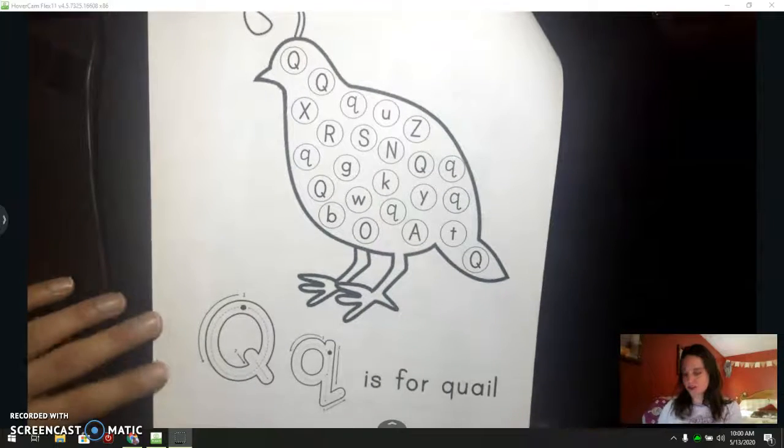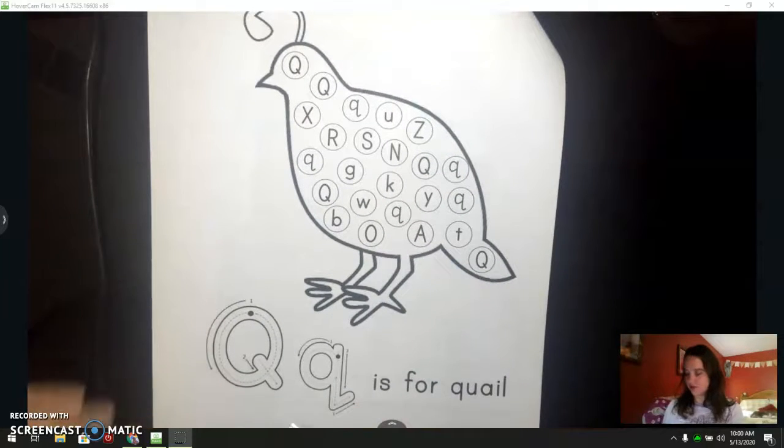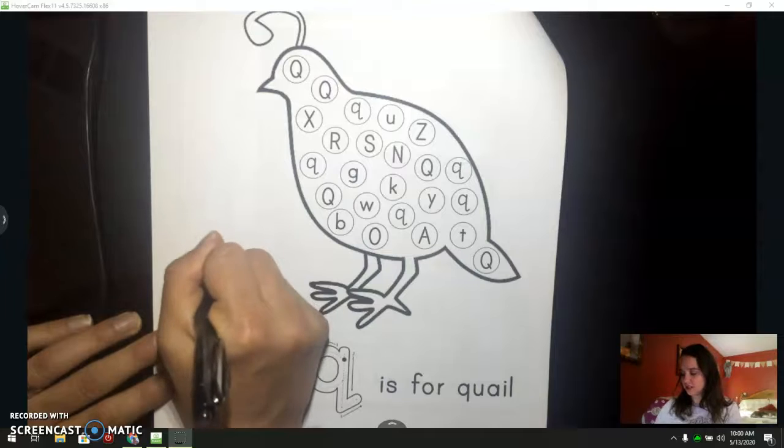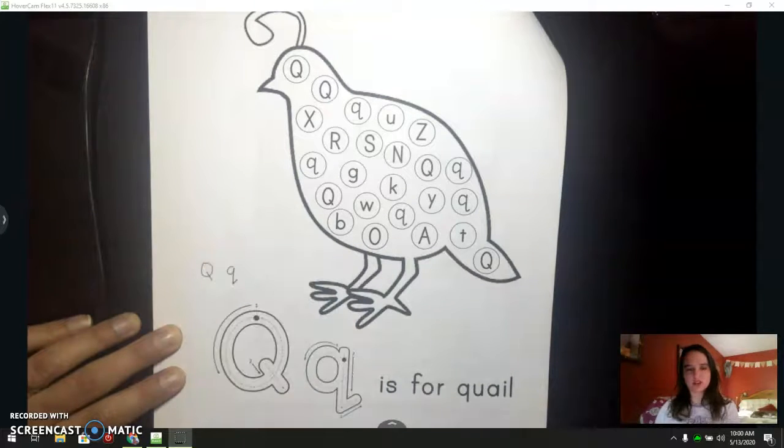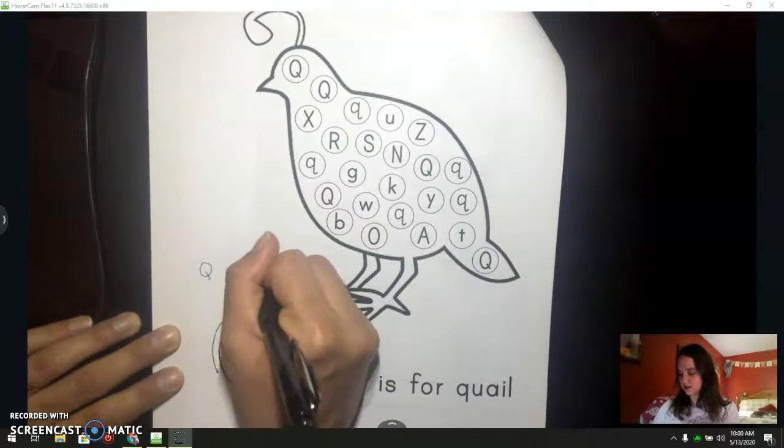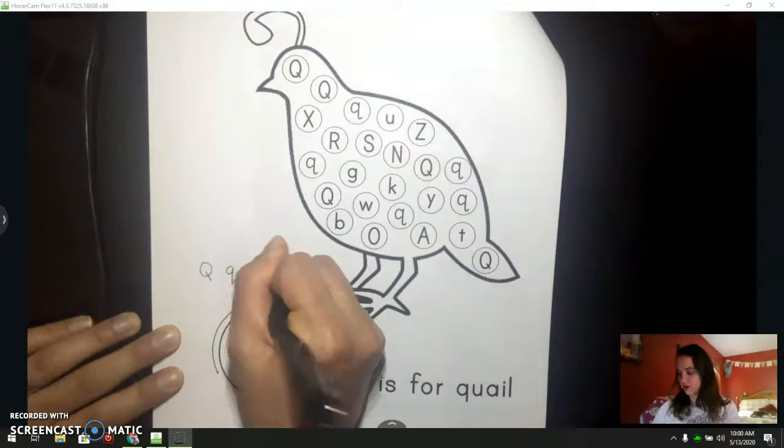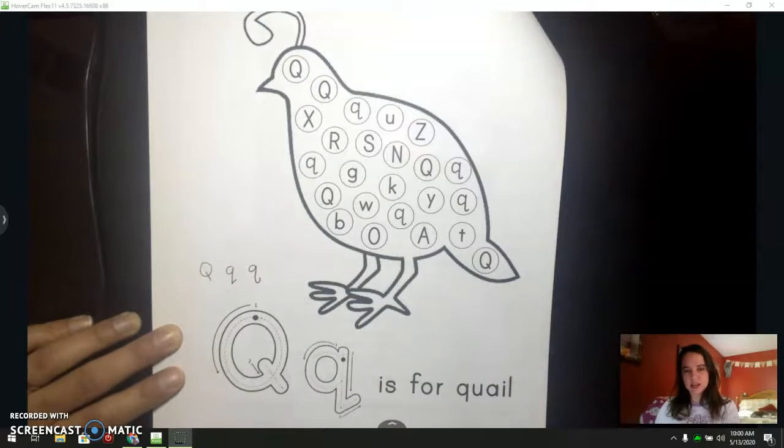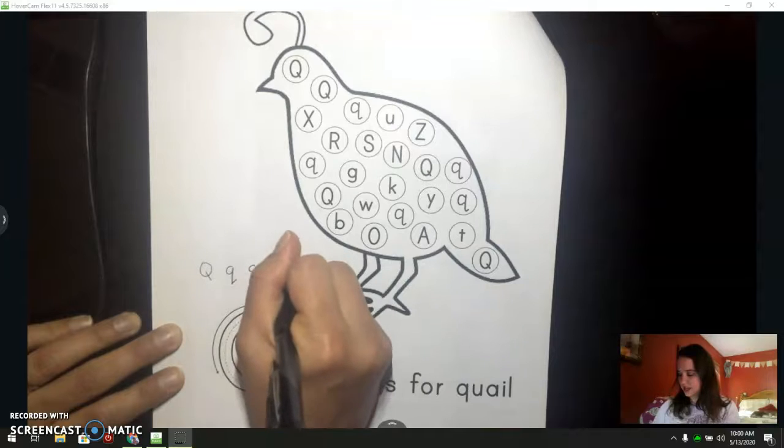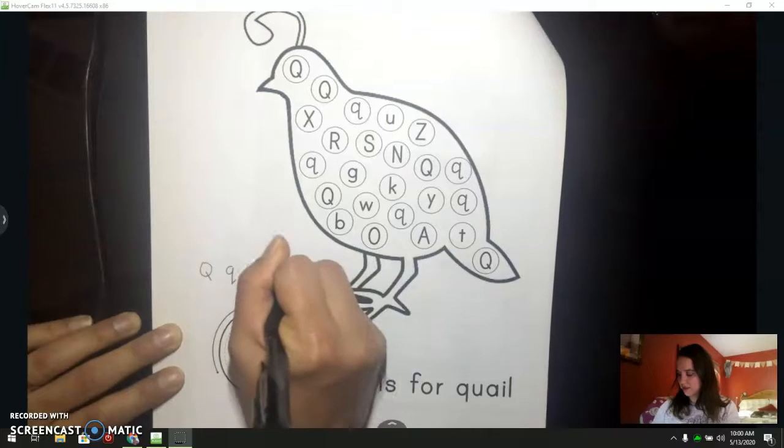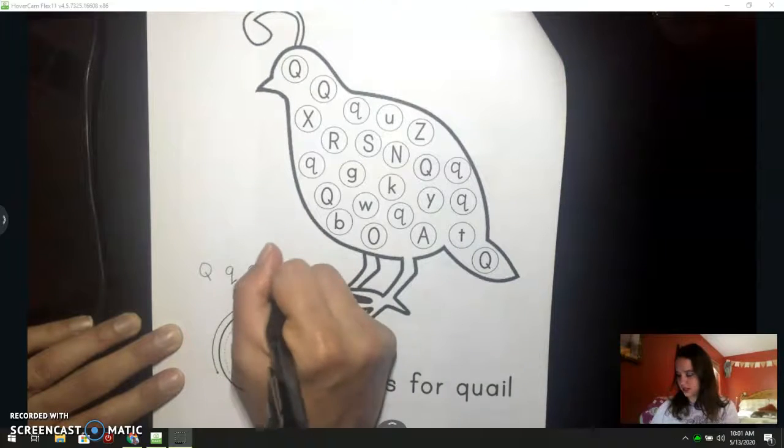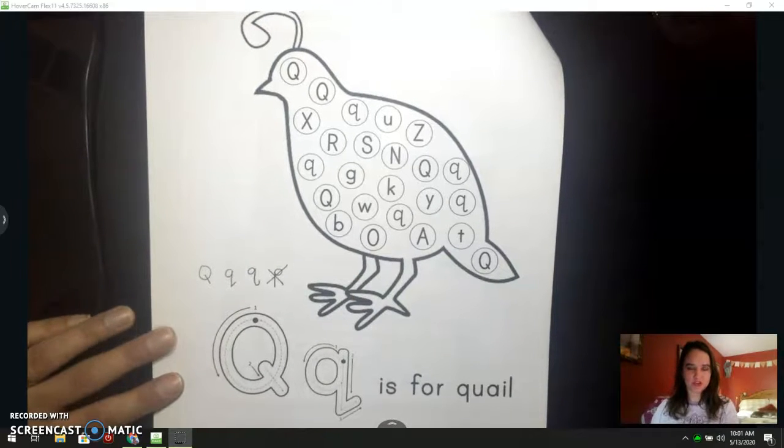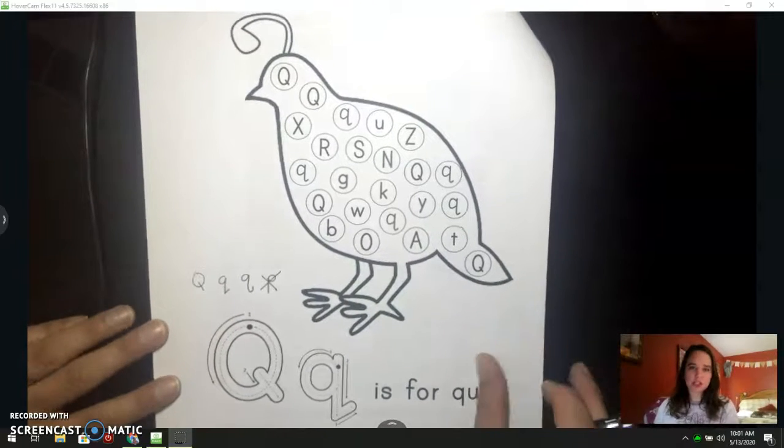There's a lot of different ways to write a Q. Uppercase Q is always the same, like that. Lowercase Q can have a straight line tail or a curved tail, but if we have the line on the other side, it's a P. So that's not a Q. That might be one of the ones trying to trick you on this page. So, let's get started.